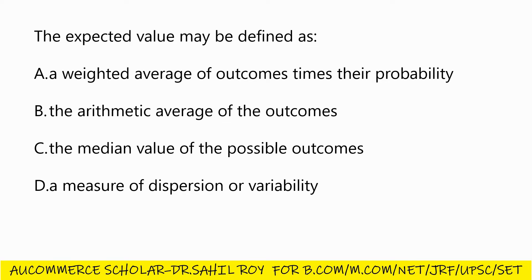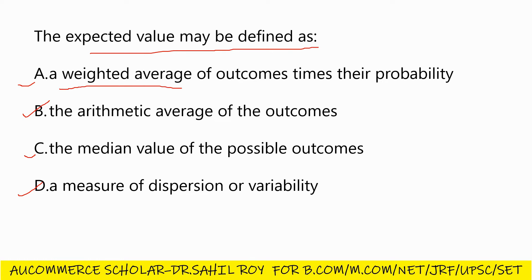Our next question: the expected value of money may be defined as — Option A: a weighted average of outcomes times their probability; Option B: the arithmetic average of outcomes; Option C: the median value of possible outcomes; Option D: a measure of dispersion or variability. The correct answer is Option A: a weighted average of outcomes times their probability.